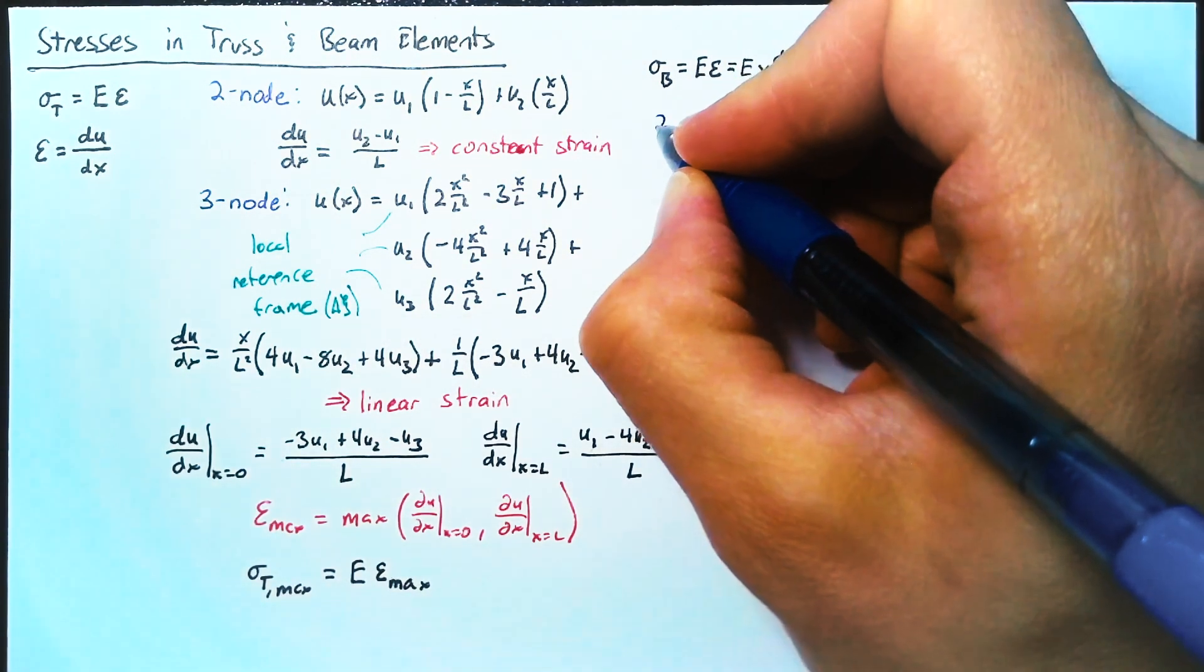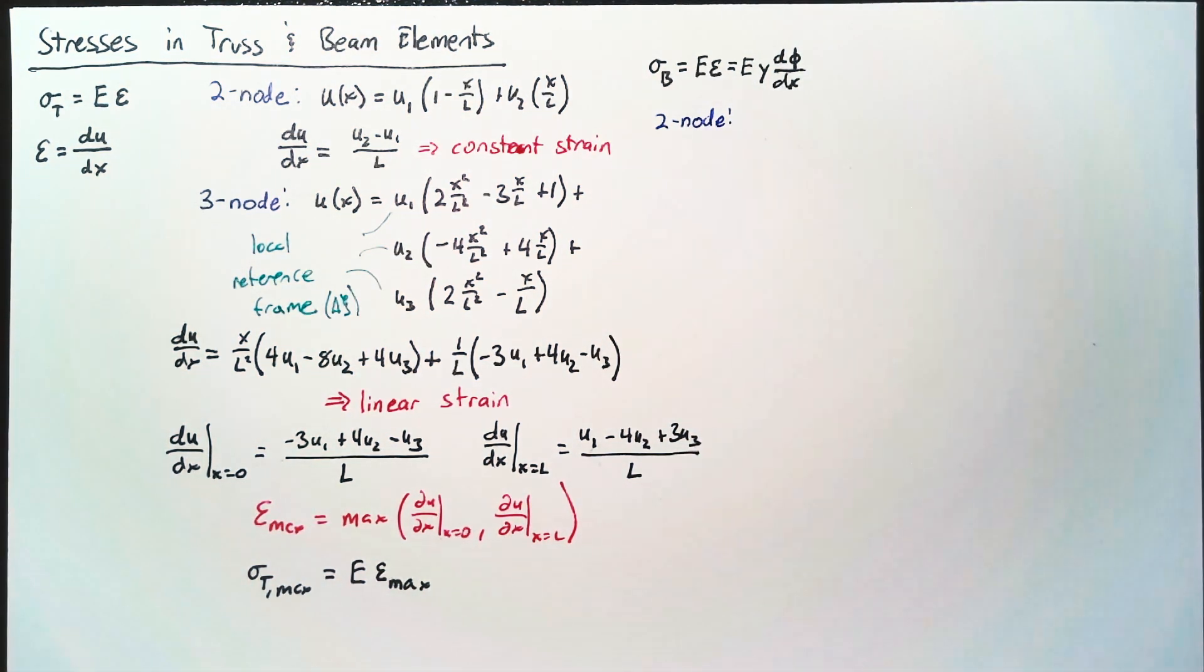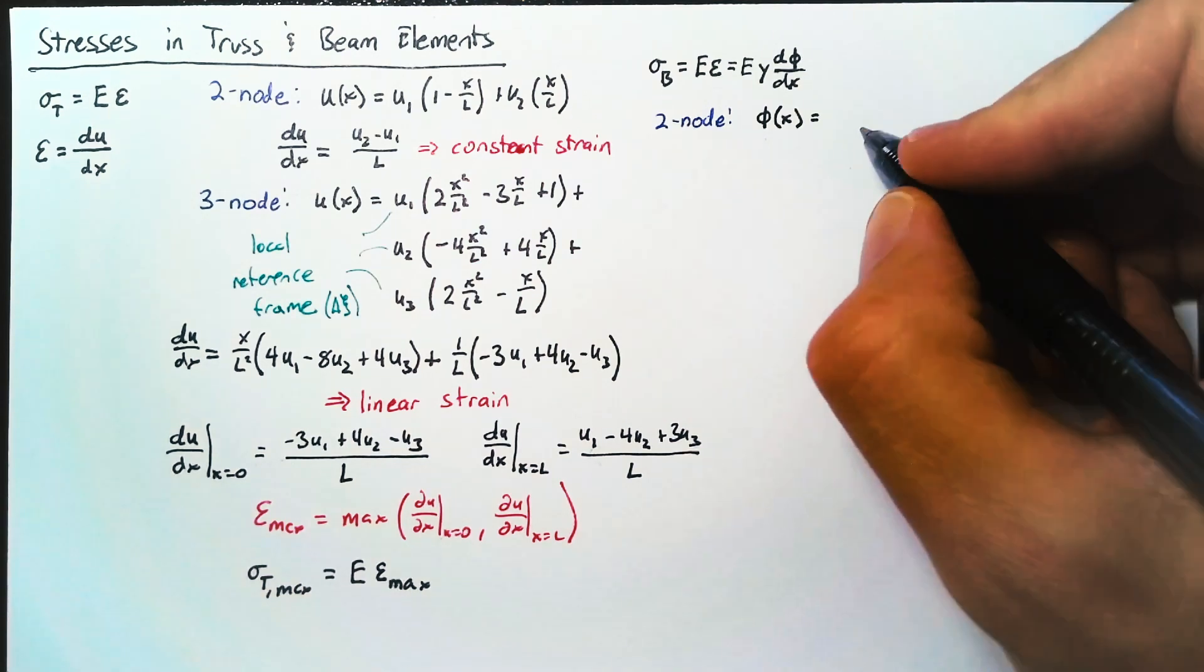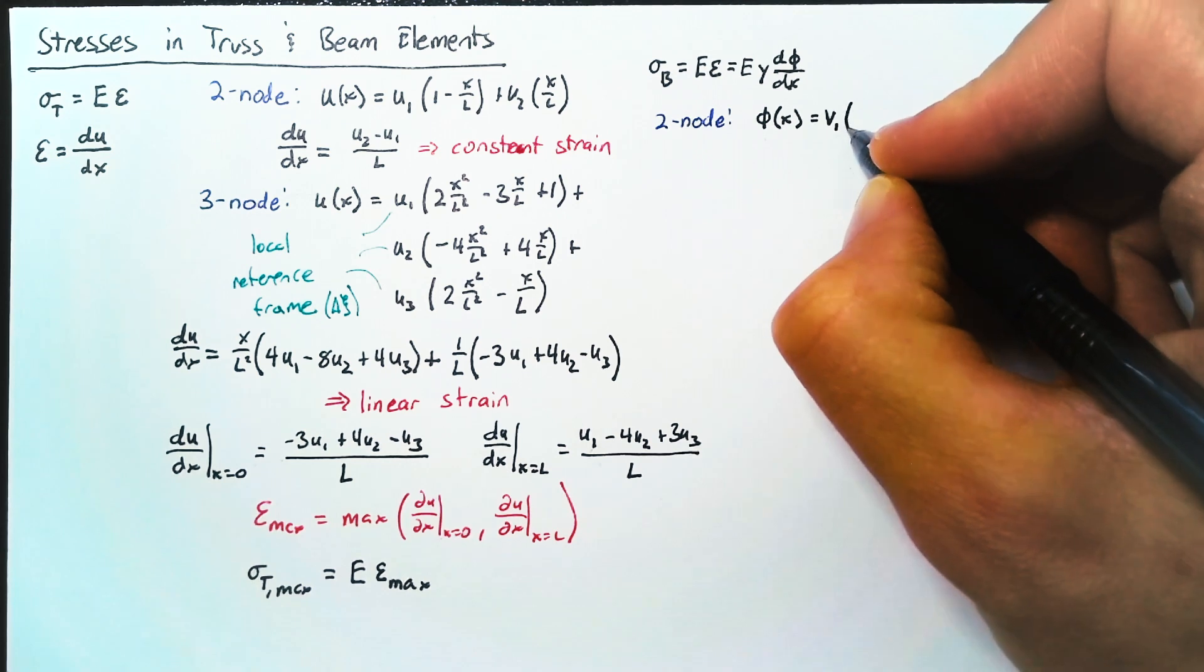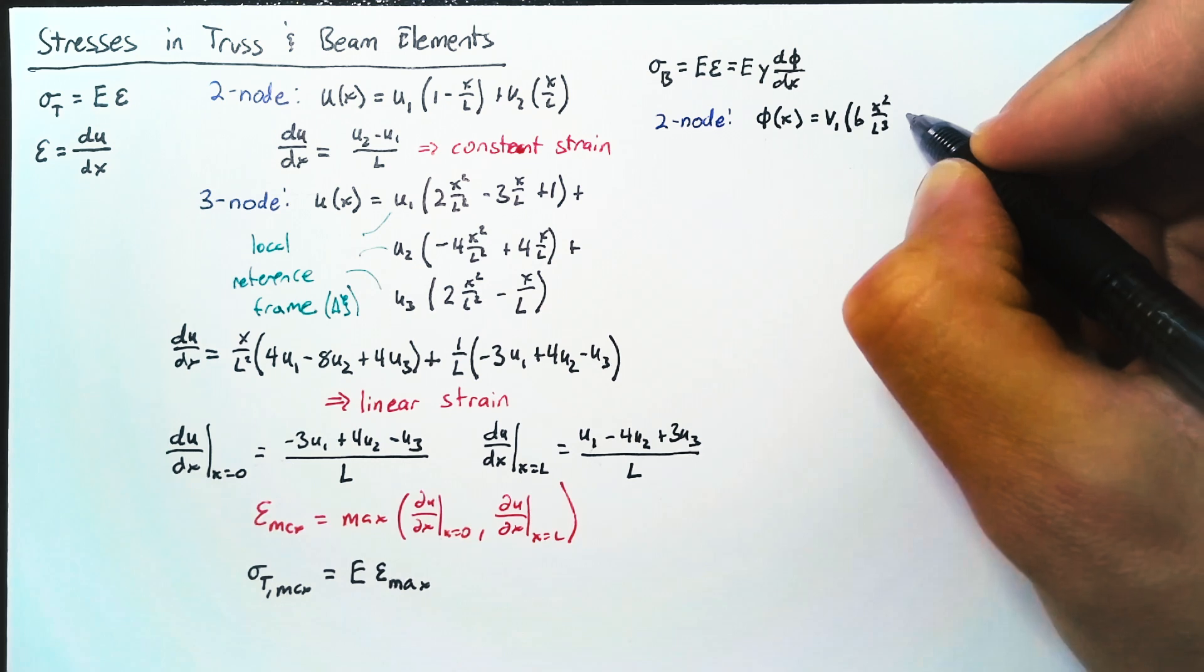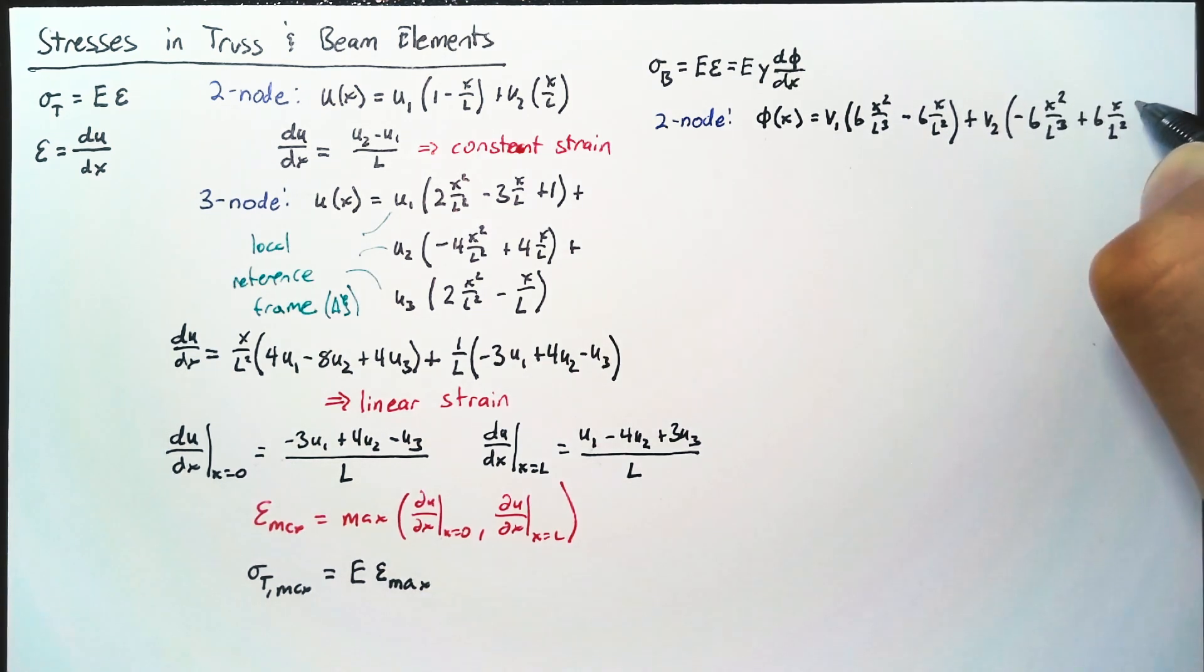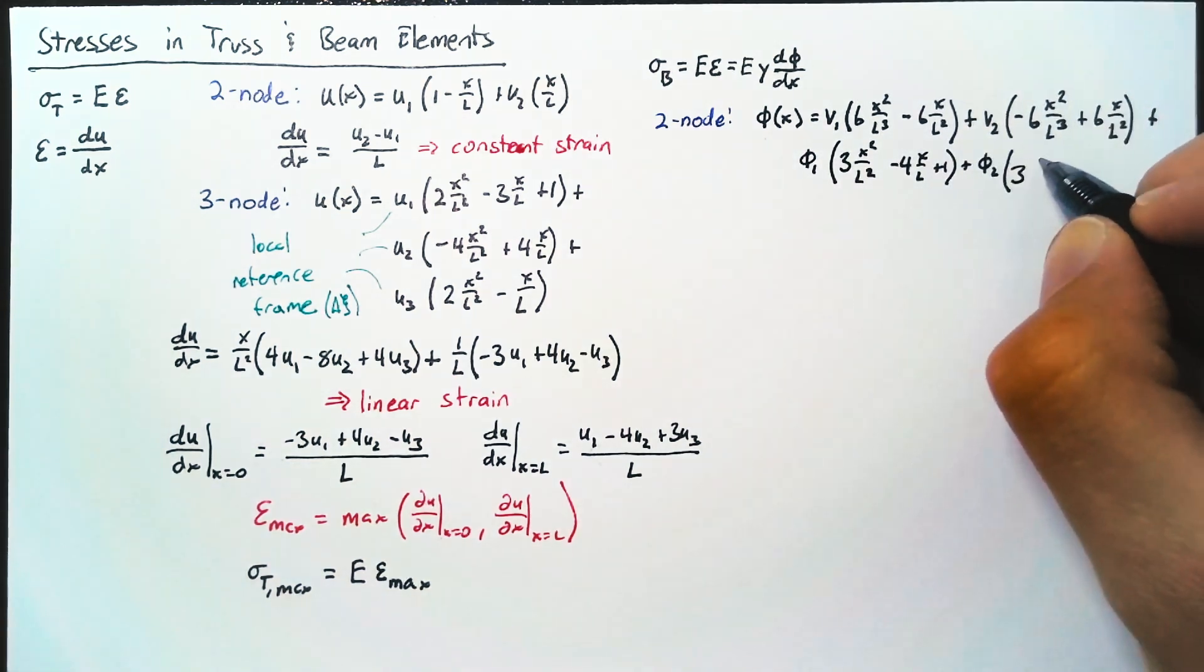So again, we're going to look at our 2 node, and this is as far as we're going to go for the beam. Going back to the beam shape functions that we discussed in a previous video, the rotational displacement is equal to V1, which is our vertical displacement, multiplied by 6x squared over L cubed minus 6x over L squared plus V2 times something very similar. And then we have a phi1 term, and finally our phi2 term.